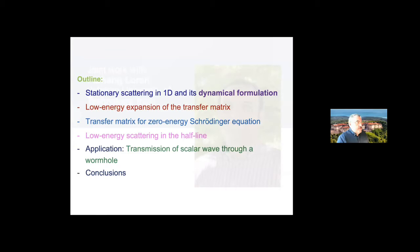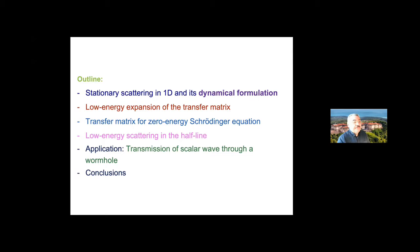This is the outline of my talk. I will start with the introduction, very basics on scattering theory in one dimension. I'll explain its dynamical formulation. Then I will show you how this formulation allows you to get the low energy expansion of the transfer matrix and therefore the scattering data. I will introduce the transfer matrix for the zero energy Schrödinger equation, which facilitates this calculation. Then I will generalize the results to scattering on the half line. And finally, I'll briefly give one application for the study of transmission of scalar waves through a wormhole.